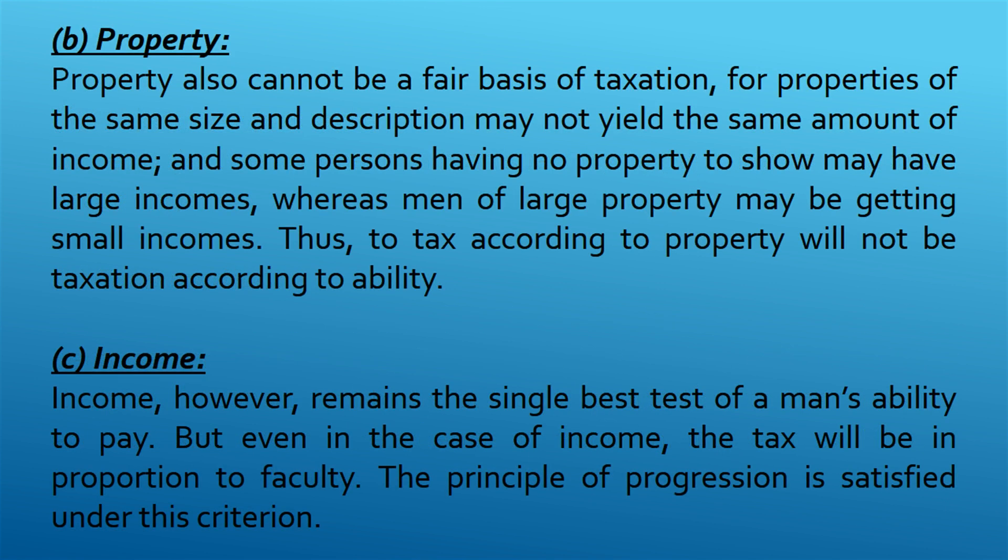Second, property. Property also cannot be a fair basis of taxation, for properties of the same size and description may not yield the same amount of income. Some persons having no property to show may have large incomes, whereas men of large property may be getting small incomes. Thus, to tax according to property will not be taxation according to ability. Third, income. Income, however, remains the single best test of a man's ability to pay. The tax will be in proportion to faculty, and the principle of progression is satisfied under this criterion.